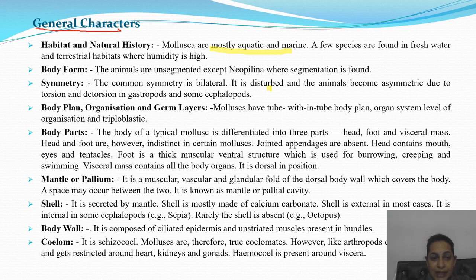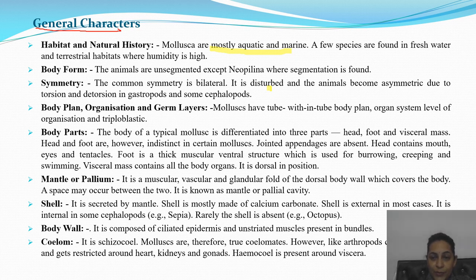Body plan, organization, and germ layers: tube within tube body plan, organ system level of organization. This is triploblastic, meaning they have three germinal layers — ectoderm, mesoderm, and endoderm.